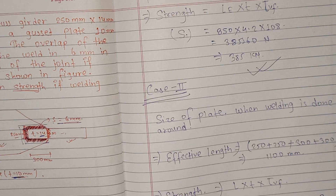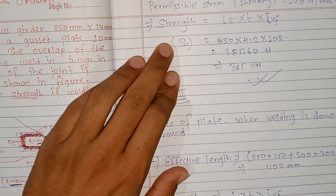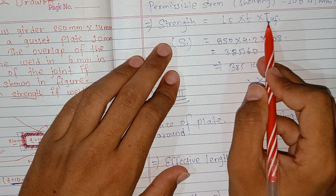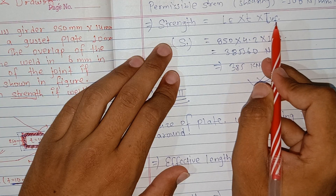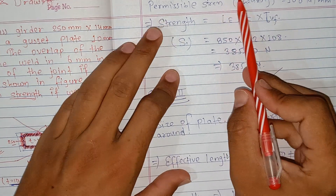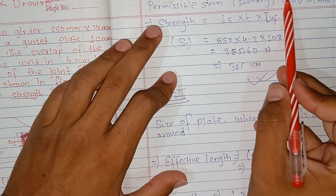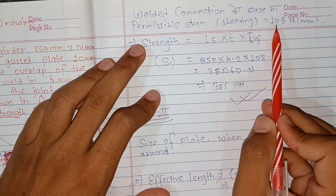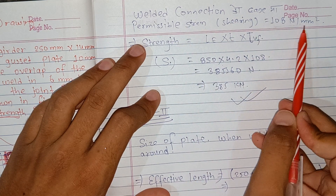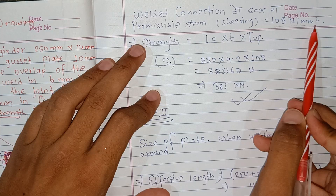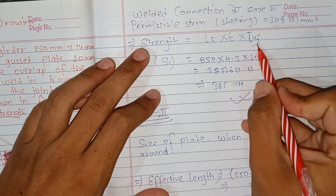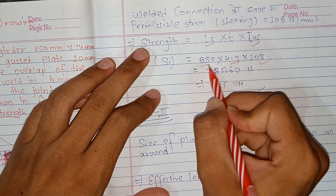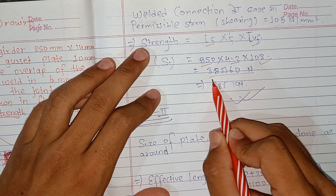Now we add the length into the shear strength formula. The effective length of 850 mm gives shear strength of approximately 385 kN, and for all-around welding with length 1100 mm the strength is 489 kN, giving an increase of 131 kN.